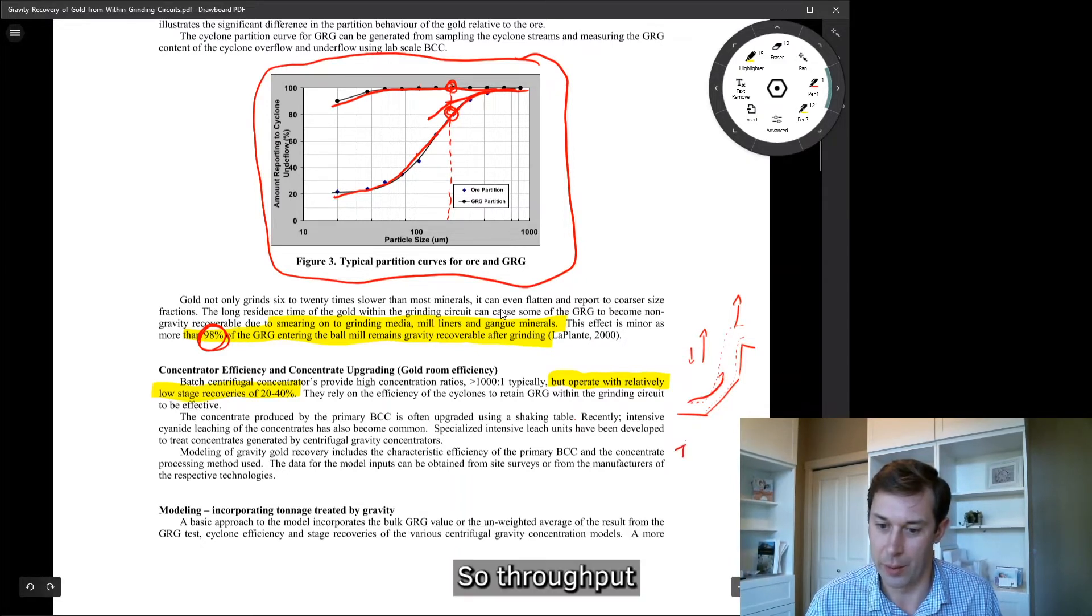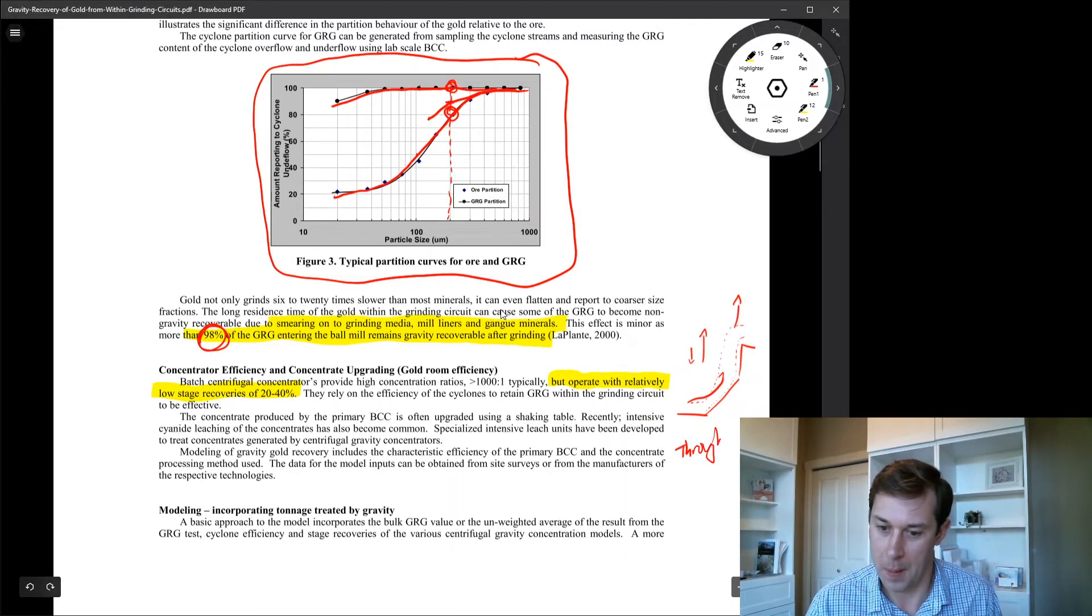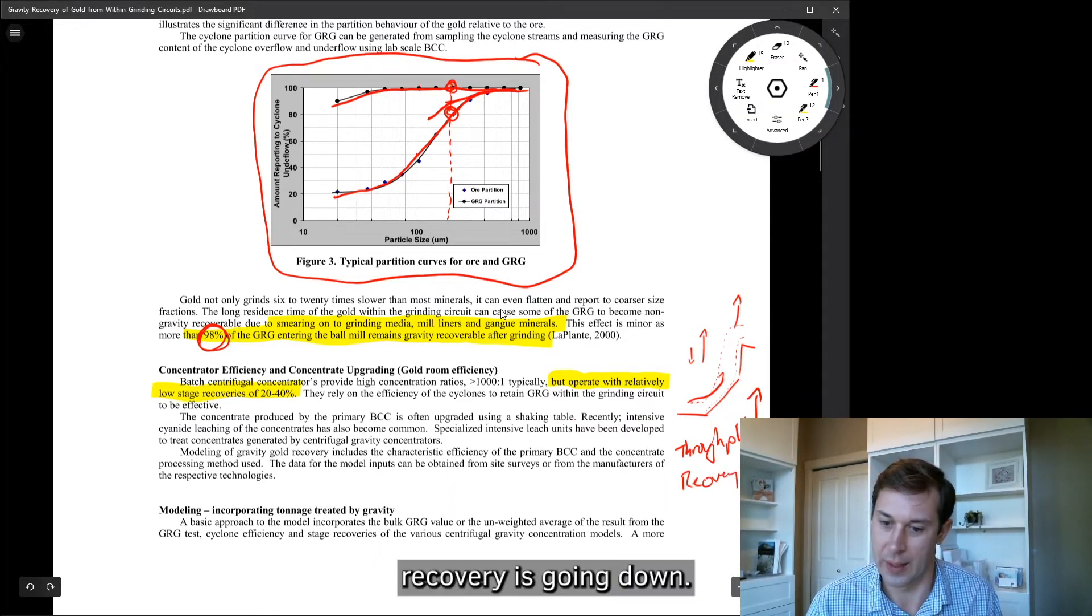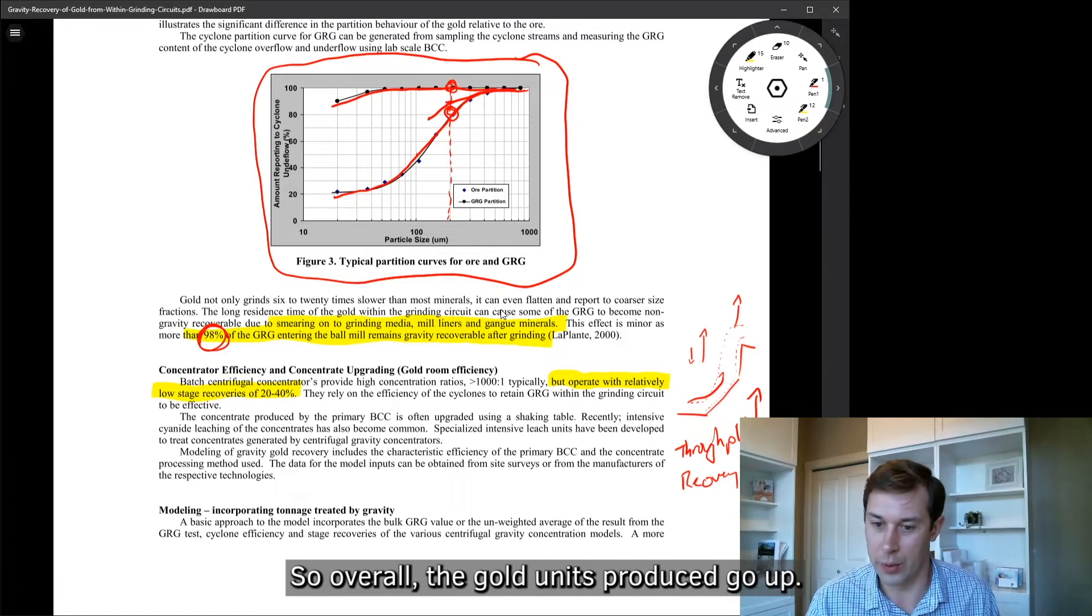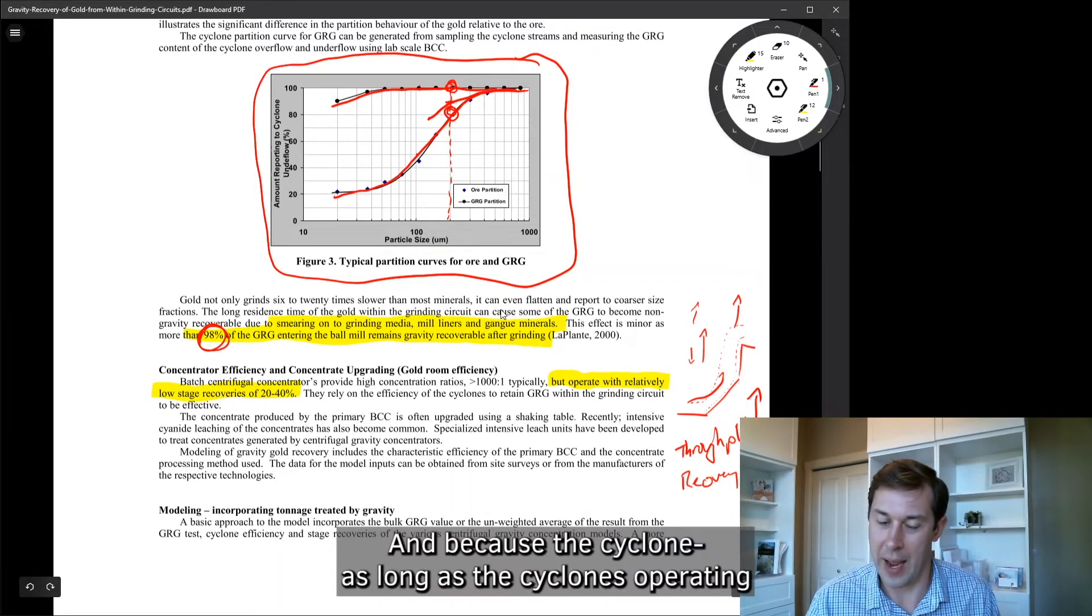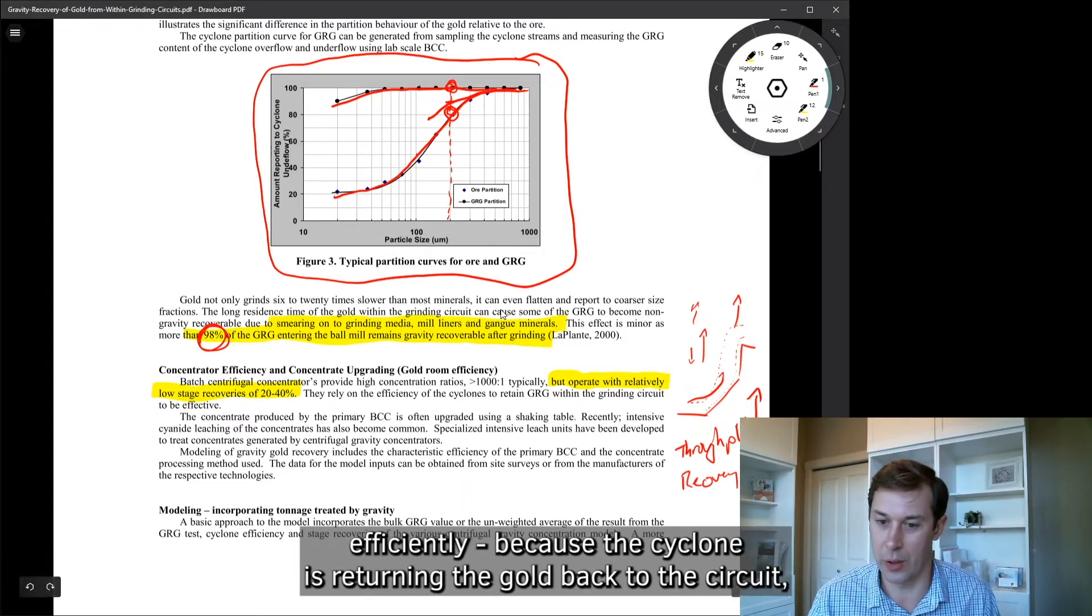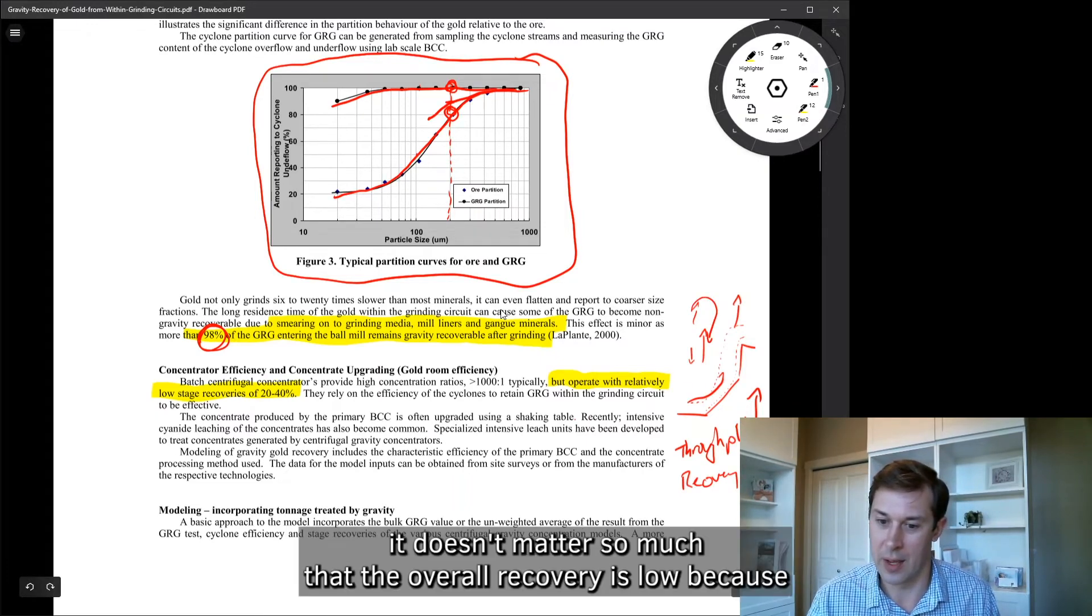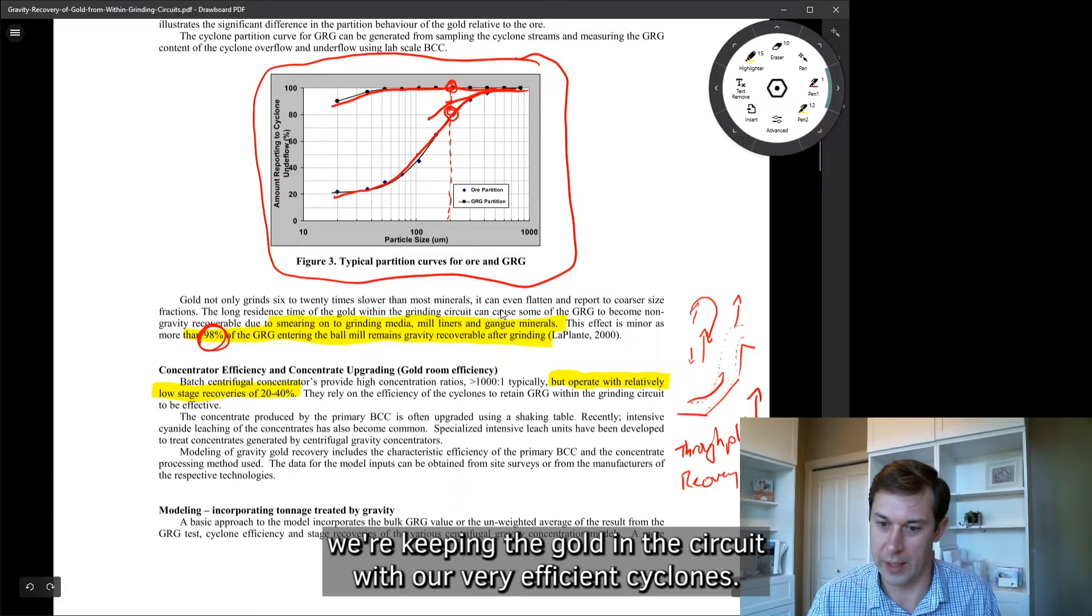However, in grinding circuits, we tend to just hammer the capacity of these things. So we've got a huge film thickness, efficiency goes down, but overall gold unit production goes up because the throughput is increasing faster. So throughput is going up way faster than recovery is going down. So overall the gold units produced go up.